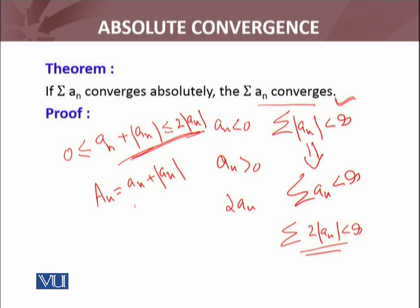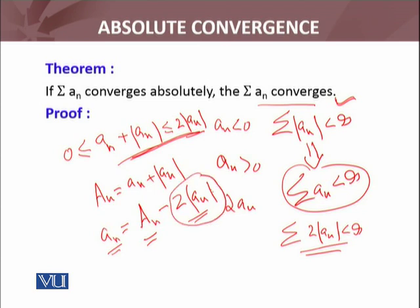I have to show the convergence of aₙ. Now this aₙ is the difference: aₙ = Aₙ - 2|aₙ|. This small aₙ is written as the difference of capital Aₙ minus 2|aₙ|. This series is convergent because I just explained.